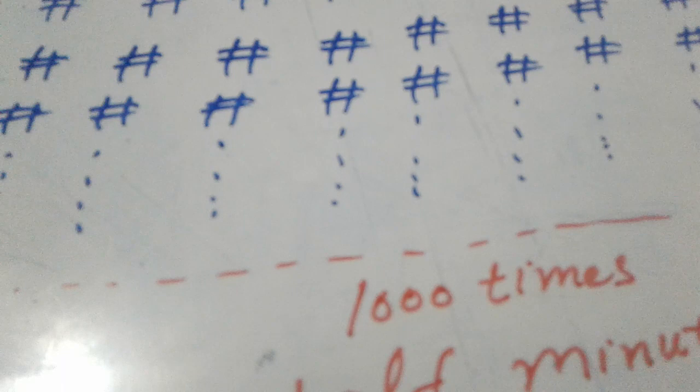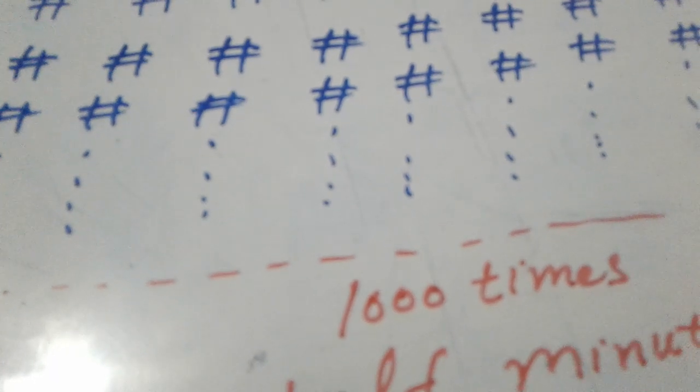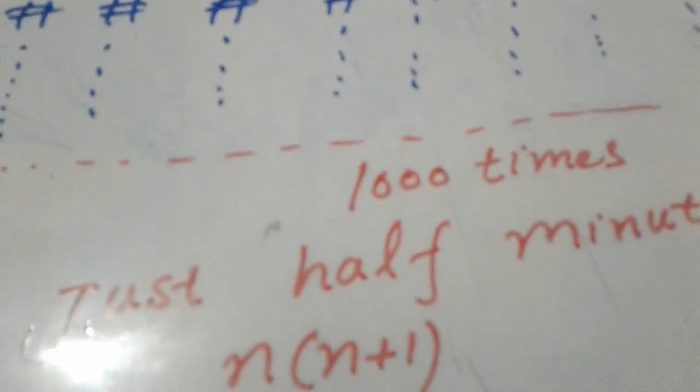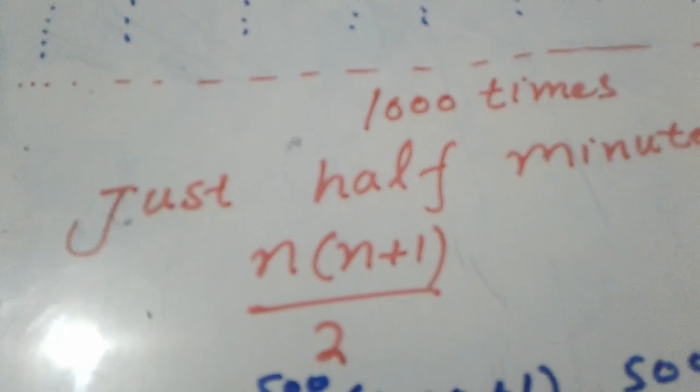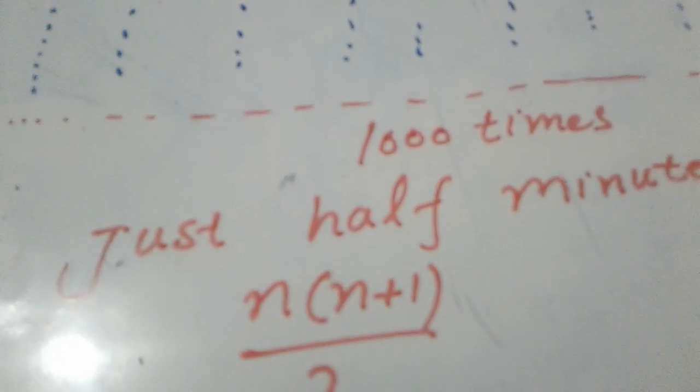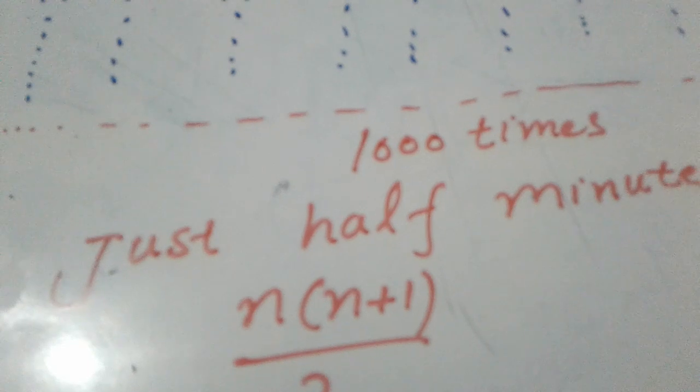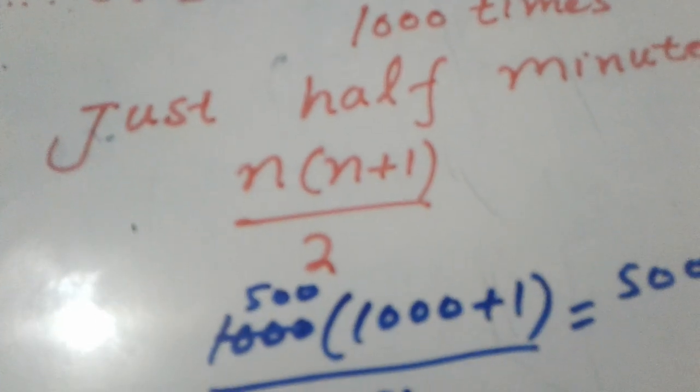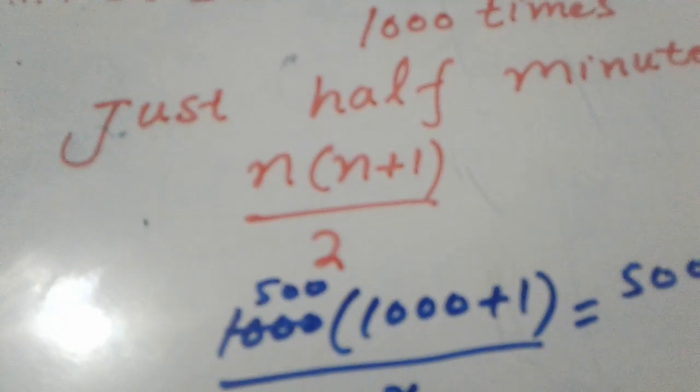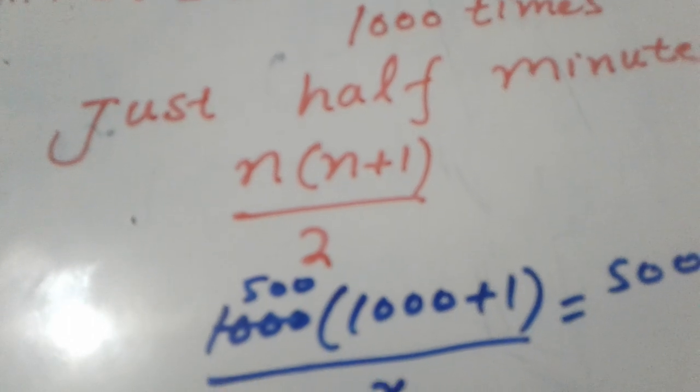It will take a long time if we calculate directly. Using the formula takes just half a minute: n(n+1) divided by 2. In place of n we will put one thousand, so 1000(1000+1) divided by 2.